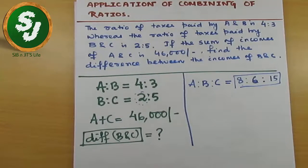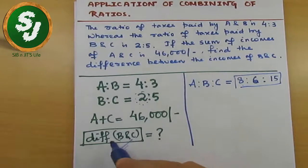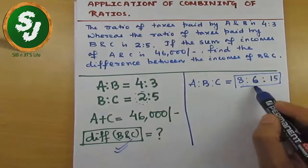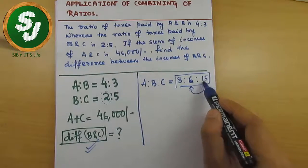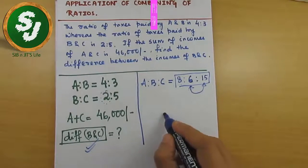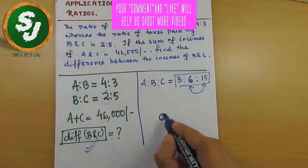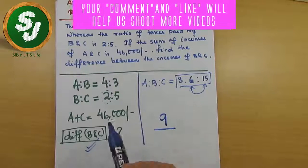And this will give you the information in the question—difference between B and C. Go to this ratio and find the difference between B and C. The difference between B and C here is 9.